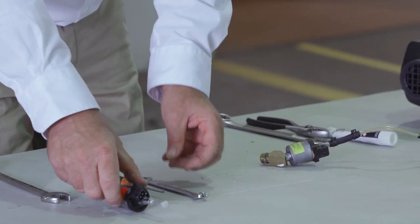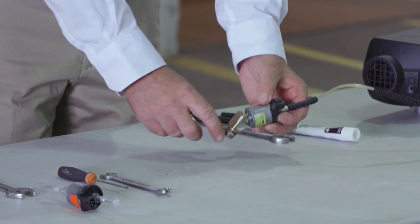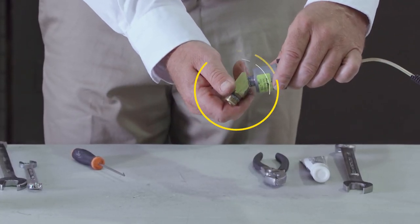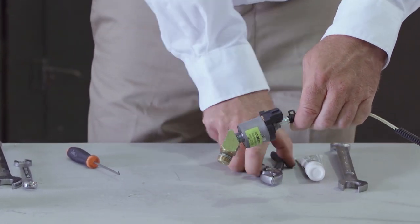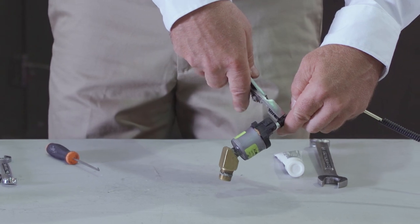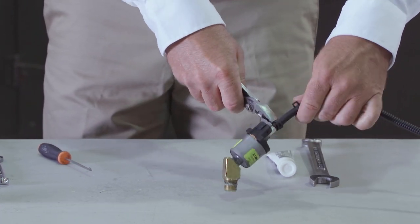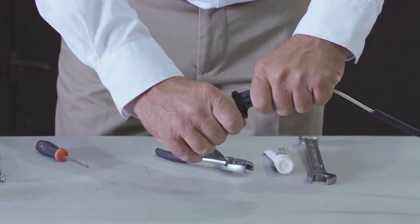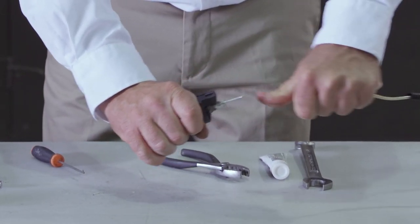Now if I happen to be working on a Freightliner, Freightliner's fuel pumps are found on top of the fuel tank on a brass fitting. On a Freightliner to replace the pump or the filter, you would remove the fuel line clamp and pull the fuel line off the outlet side of the pump.